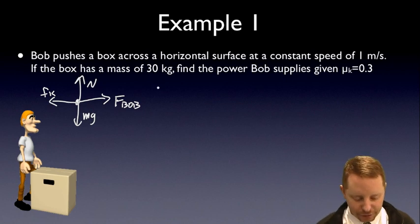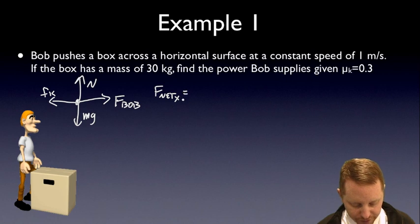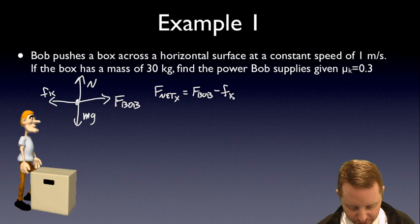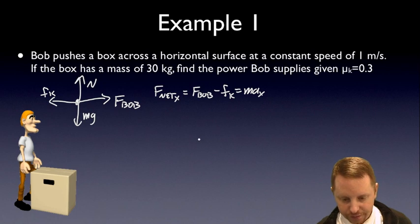So from there, I can use Newton's second law. The net force in the x direction is going to be the force of Bob minus the force of friction, and that all has to equal mass times the acceleration in the x direction. We already know that the acceleration in the x direction is going to be 0 because it's moving at constant speed. So the force of Bob must equal the force of friction.